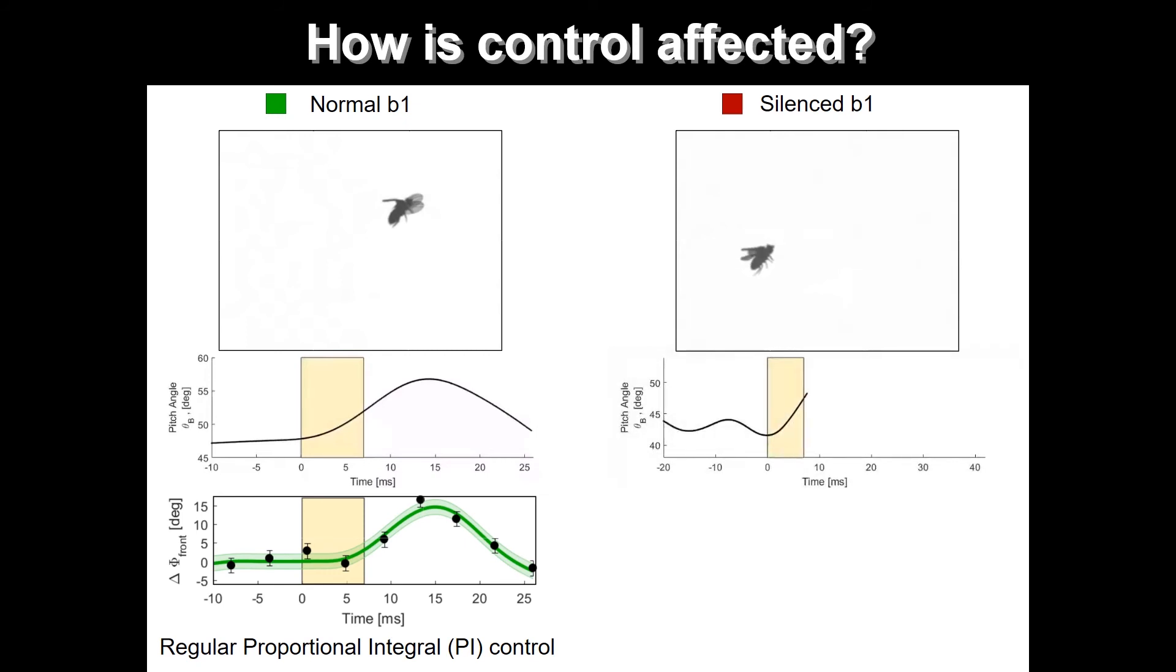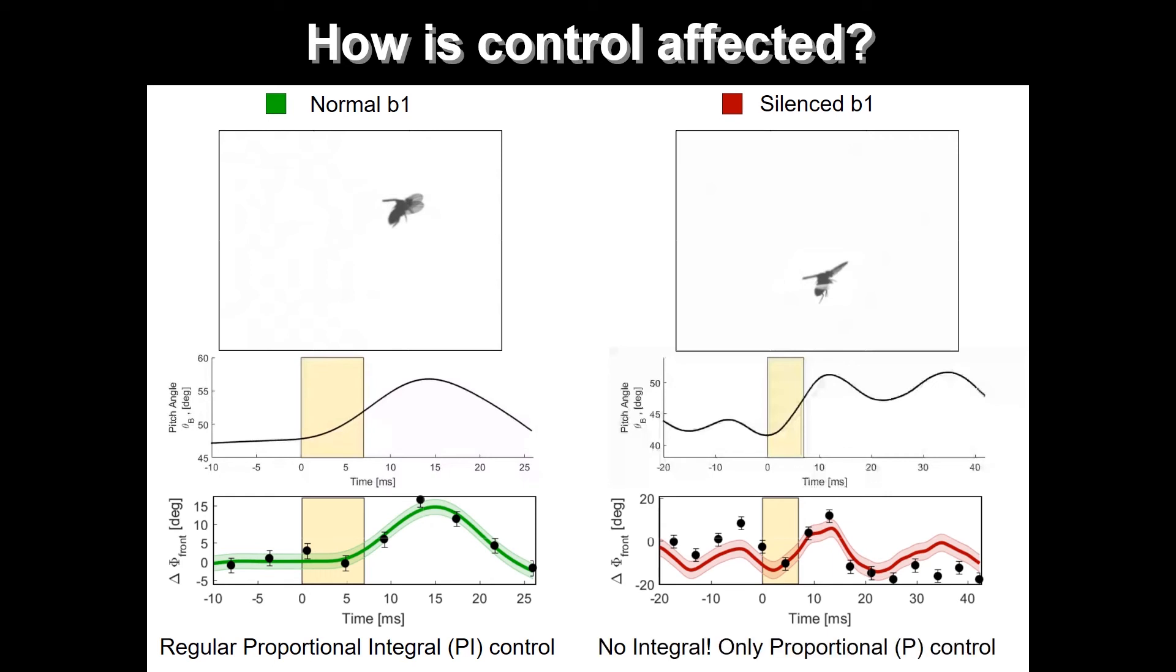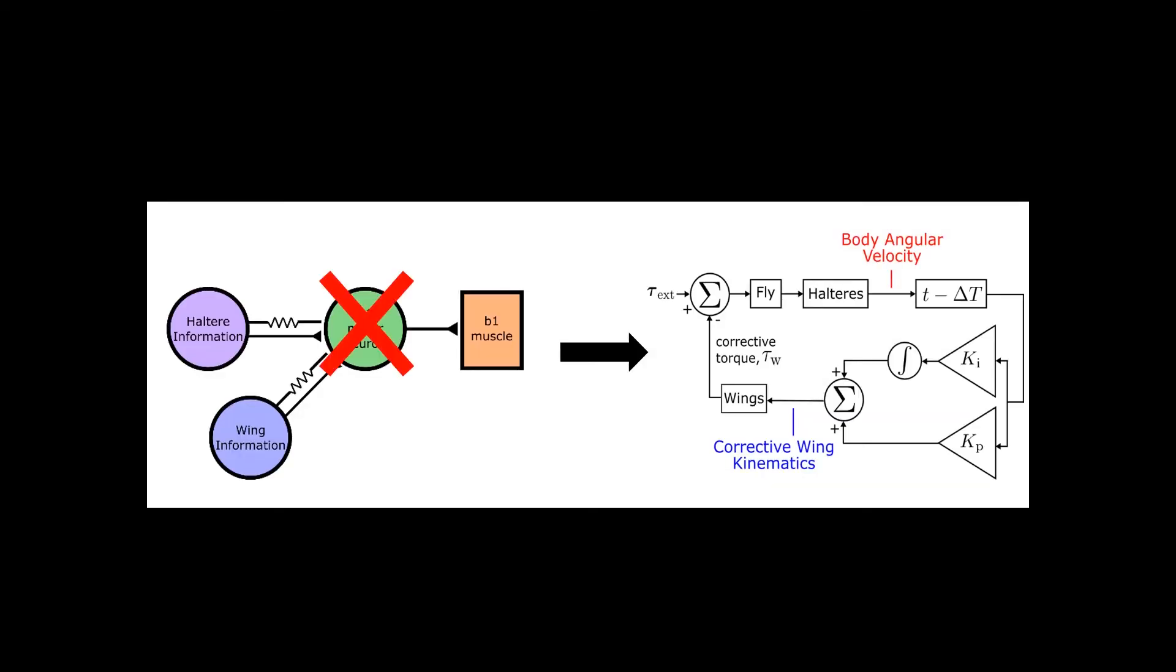This is the B1 silenced fly. I've taken out this muscle. These flies start off quite wobbly to begin with. Then after we apply the perturbation, they are able to slow the perturbation down, but now they're wobbling about a different angle. They can no longer remember what angle they were originally flying with. And when we take a look at the controller, we can still fit the forward sweep of the wings, but now we can only use a proportional controller. We took out the integral term. That one muscle controlled one branch of that control theory diagram. If you take it out, you take out that branch.